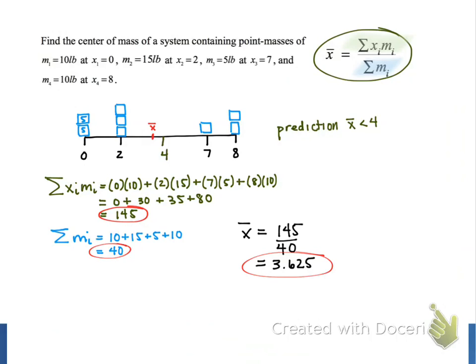And so that gives us our final result, that our center of mass is at x equals 3.625.